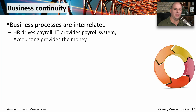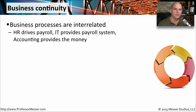One of the most important aspects of your job is to keep the business running. The continuity of your business becomes extremely important across every part of what you do as an organization. Many of these business processes are completely interrelated with each other, especially when we talk about how technology affects them. For example, HR is going to drive payroll, your IT systems provide the payroll system in use, and accounting is providing the money going into that payroll system. All of those systems have to work together so that you're able to pay people every couple of weeks.